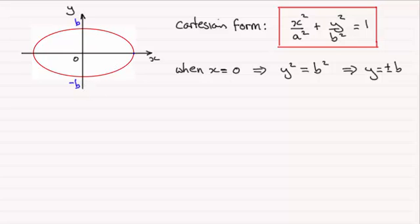And if I put those points in we've got b up here and we've got minus b down here. And similarly if I let y equal 0 to find out where it crosses the x axis, it follows that x squared will equal a squared. And from this it follows that x will equal plus or minus a. So marking those points in we've got a there and minus a there.